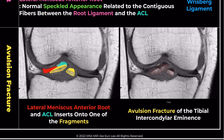The bone fragments have shifted upwards, losing contact with the bone below. In this case, showing an ACL avulsion fracture, the anterior root of the lateral meniscus is also attached to one of these fragments, potentially complicating the fracture reduction.